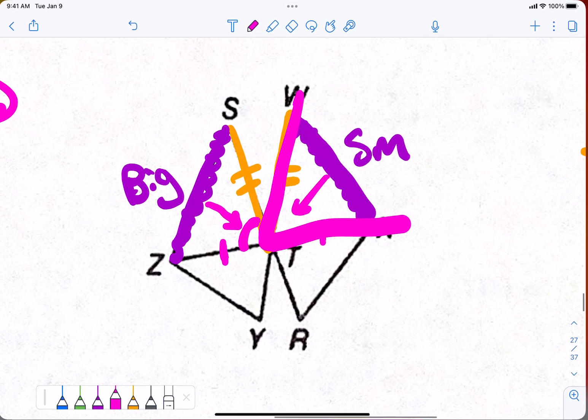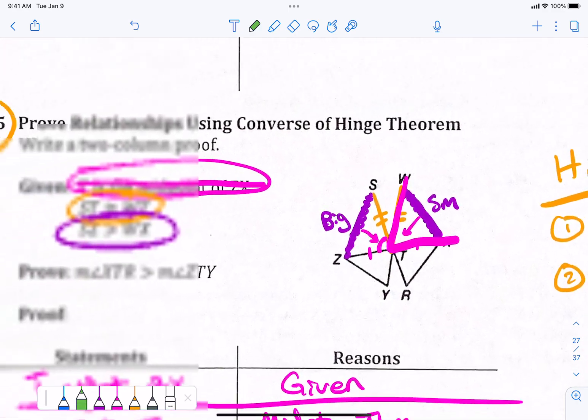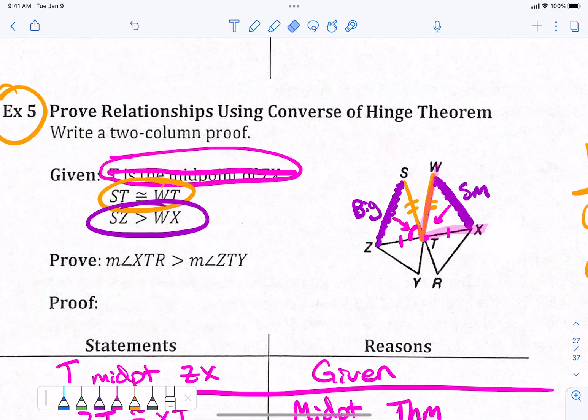All right. Now, here's the problem, though. What we're trying to prove, let me, I'll show you to you on your diagram. What we're trying to prove is that XTR, XTR, this angle right here is a big angle. And ZTY, this guy is a small angle. We're trying to compare these bottom ones.